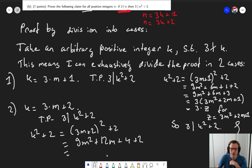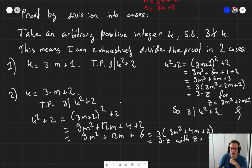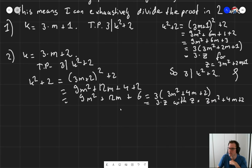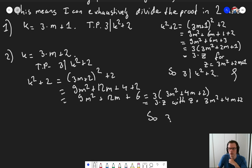If I did the math right, that it is 9m squared plus 12m plus 6. Which is exactly 3 times 3m squared plus 4m plus 2. Which is 3 times z with z equals 3m squared plus 4m plus 2. So 3 divides k squared plus 2. Curly thing. And so in the second case, it also holds.